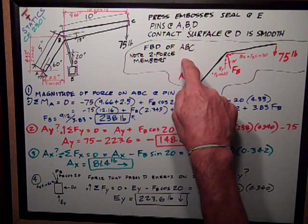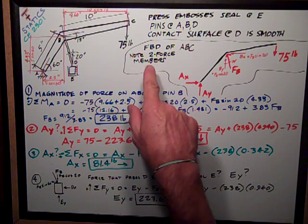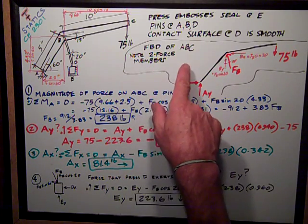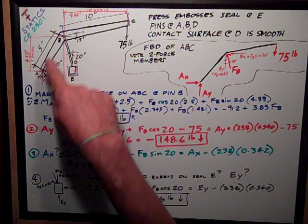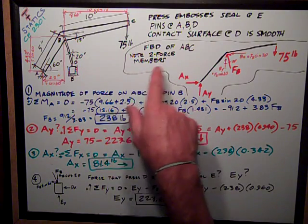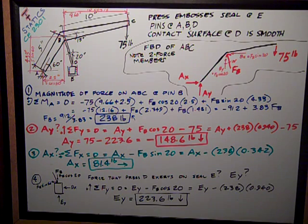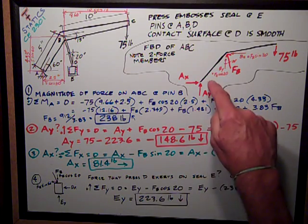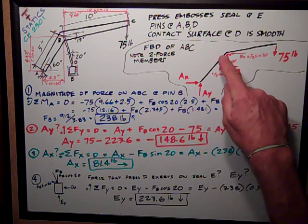First thing I'm asked, and the first thing I should always do on statics problems, is to do a free body diagram of ABC and noting two force members. It's very important whenever I'm analyzing a frame to look for two force members because that simplifies my solution. So here I've got it, A, B, C.